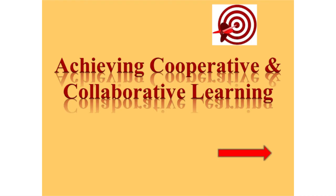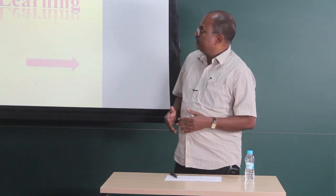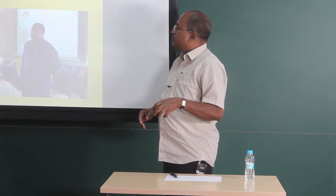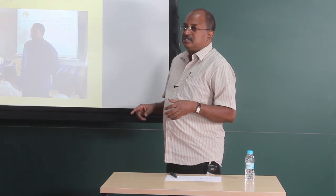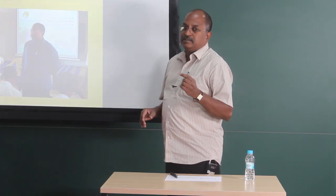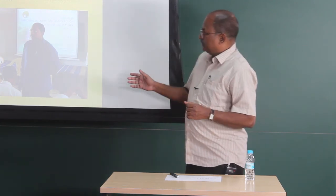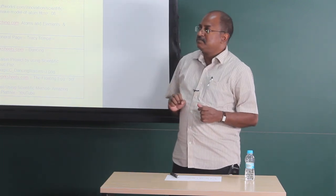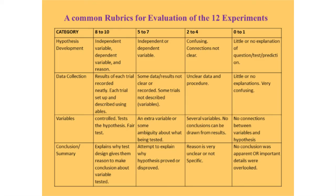In order to achieve cooperative and collaborative learning, I decided to involve students from neighbouring schools. We conducted a workshop where 31 students from 3 neighbouring schools and 29 students from my school — a total of 60 students — were divided into 12 groups of 5 students each. Each group was given one experiment. I identified 12 experiments from web resources that explicitly talk about scientific method, and framed a common rubric for all 12 experiments for evaluation.